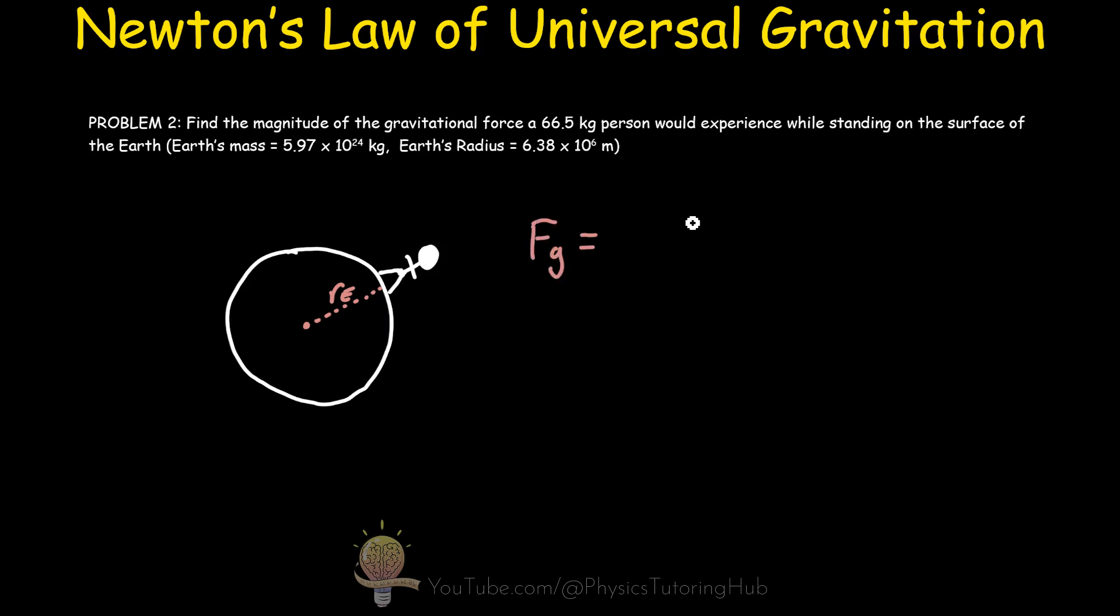So again here we can use Newton's law of universal gravitation to solve this problem. And we're given the mass of both objects here. But what is the distance between these two masses? Now it's quite easy to assume that the distance is zero. But this is not the case here.